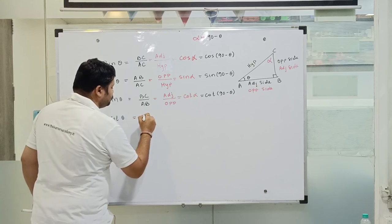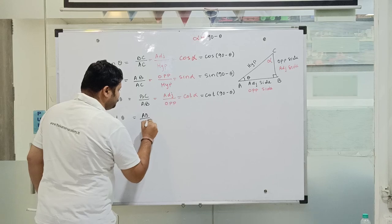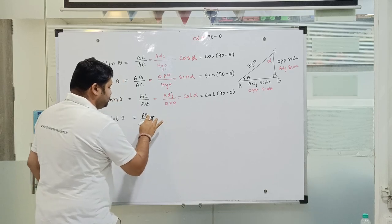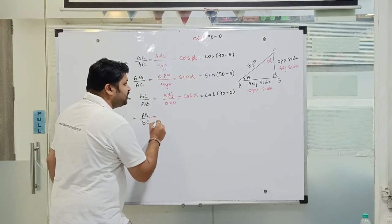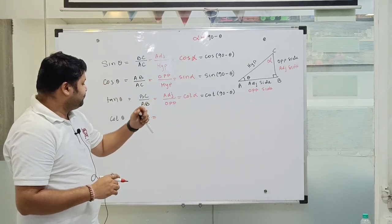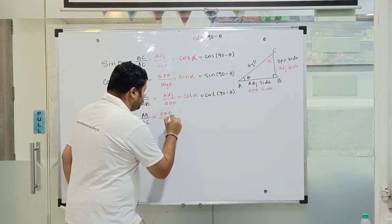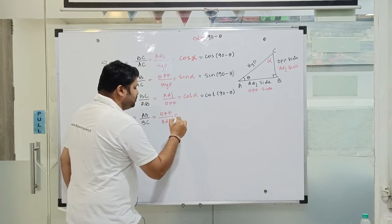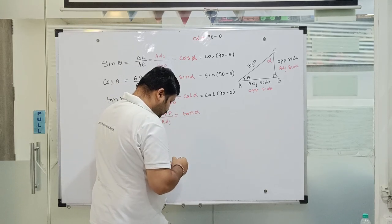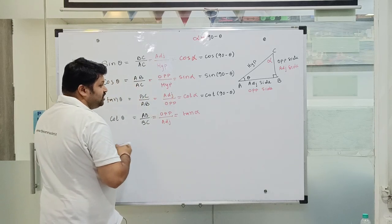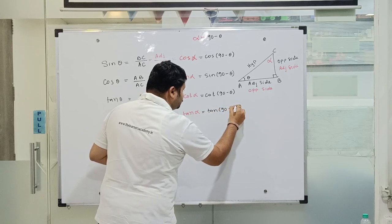Similarly, cot theta is equal to AB upon BC. With reference to alpha, AB upon BC is the opposite side upon adjacent side, which is tan alpha. Therefore cot theta is equal to tan of 90 minus theta.